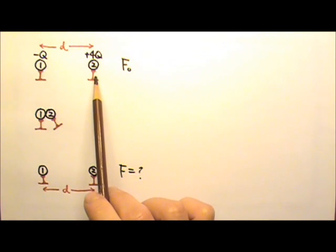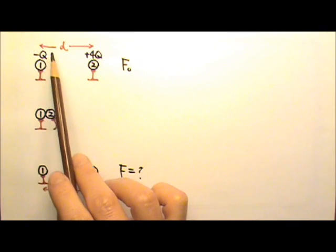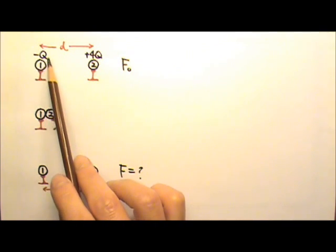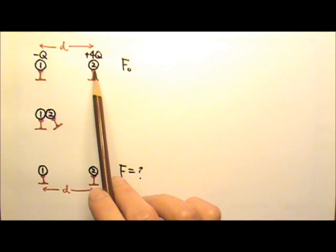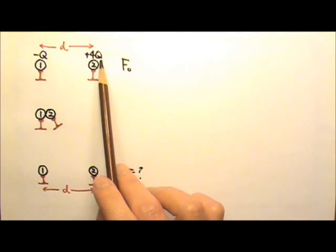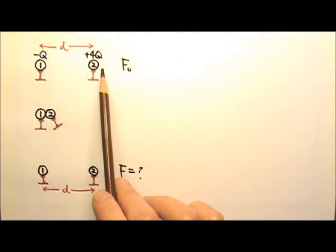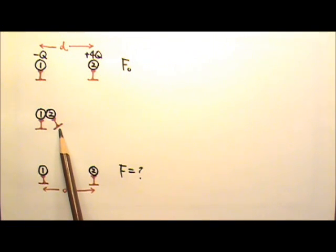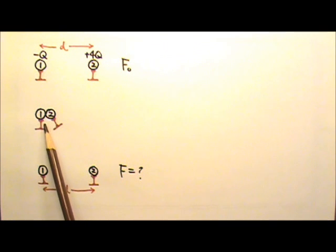Identical isolated small conducting spheres 1 and 2 are distance d apart. Initially sphere 1 has a net charge of negative q, sphere 2 has a net charge of positive 4q, and the electric attractive force between the two is F0. Then sphere 2 is moved by its insulating stand to touch sphere 1, and then put back to its initial position. Find the electric force between the two spheres now.